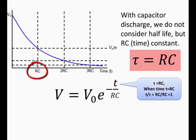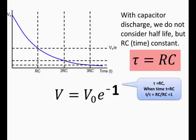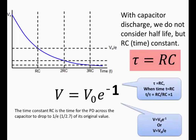Let's take an example when the time T is equal to RC. So we take this interval of time equal to RC, which means RC divided by RC gives 1. So V equals V₀ e to the minus 1, or rather V equals V₀ divided by e. What this means is that the time constant is RC, and after RC seconds, this is the time for the potential difference across the capacitor to drop to 1 over e — in other words 1 divided by roughly 2.7 — of its original value.